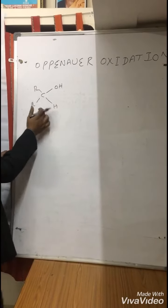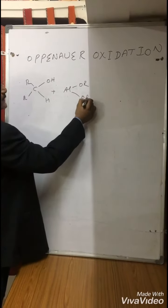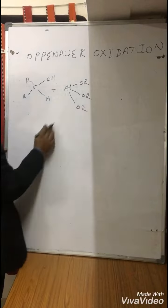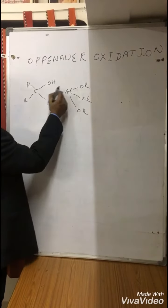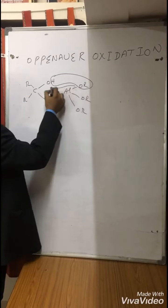Secondary alcohol with aluminum alkoxide. This is aluminum alkoxide, and hydrogen goes like this, and this bond comes like this. Then OR, C bond, OR, OR, OR, and this is hydrogen. This is alcohol.